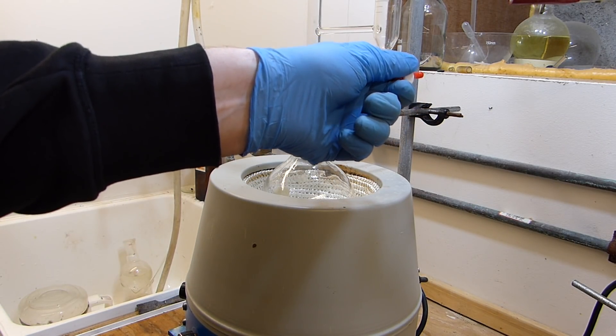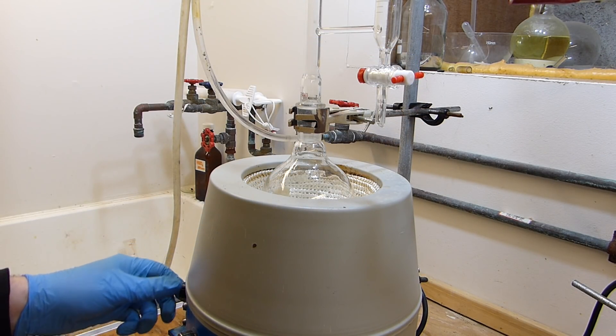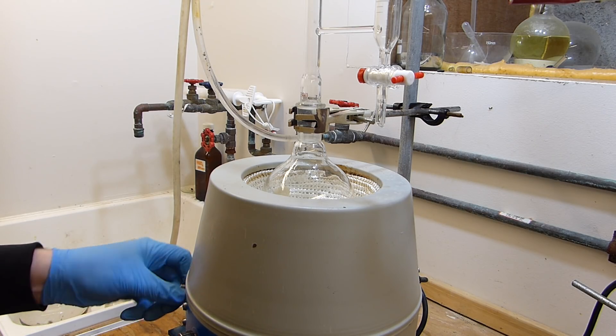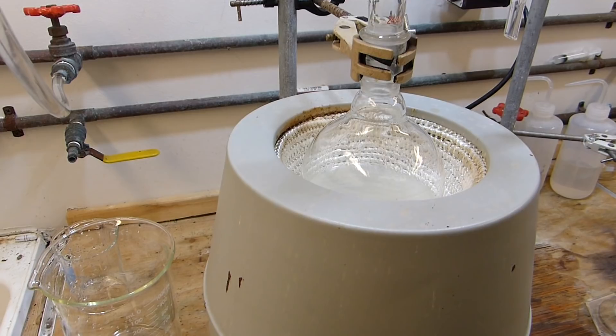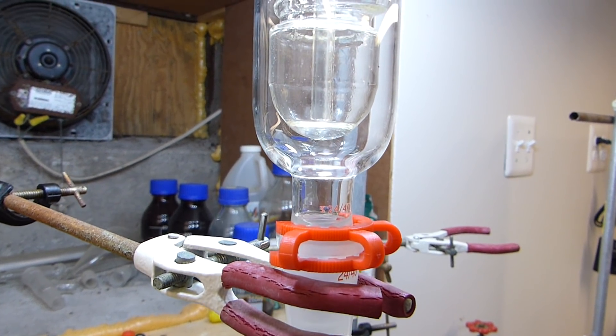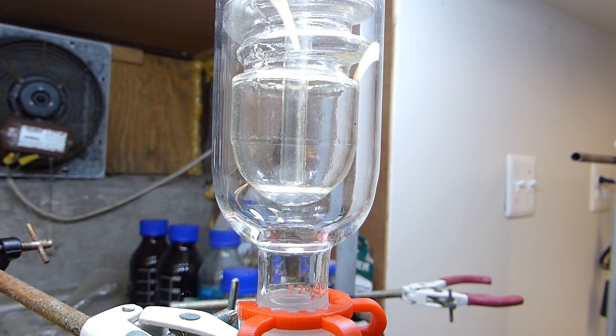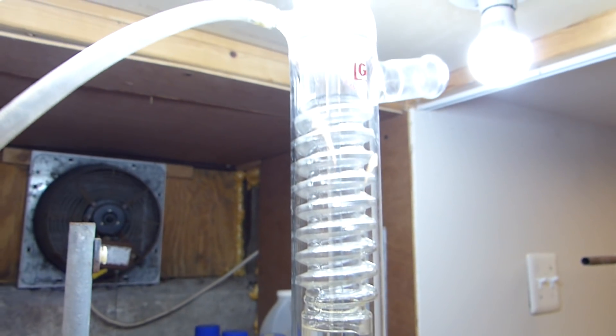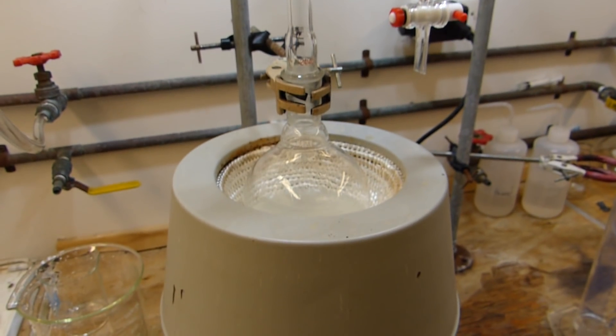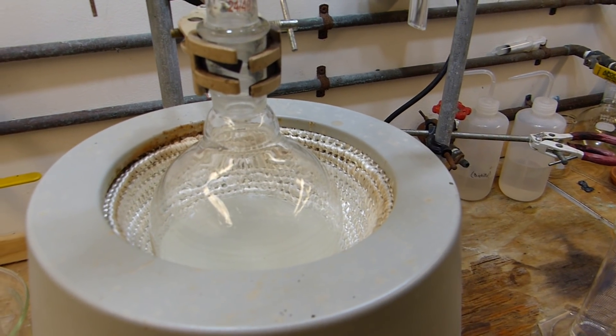Now I'm going to remove this funnel and hook this up to the apparatus and then raise the heating mantle and begin heating. The Dean-Stark stopcock is closed, very important. I'll now turn on the condenser water and that's about a good flow rate. This is all set up and ready to go.